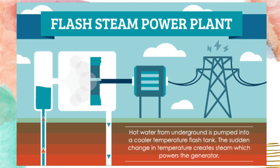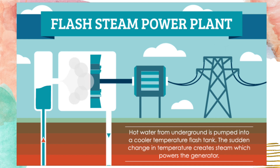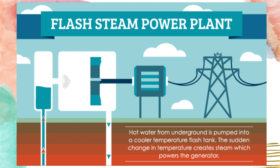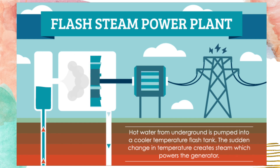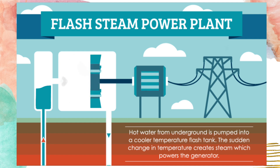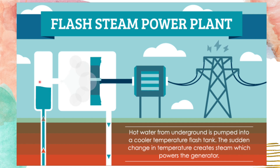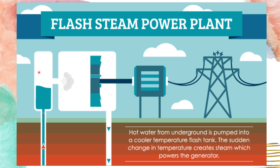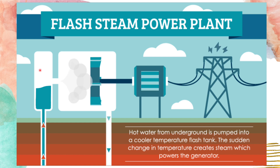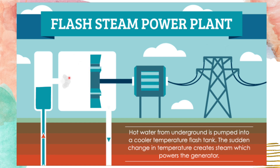The second type of geothermal power plant is the flash steam power plant. If the dry steam power plant requires three important factors, the flash steam power plant requires five factors: hot water, a tank with a cooler temperature, the presence of steam, turbines, and a generator.